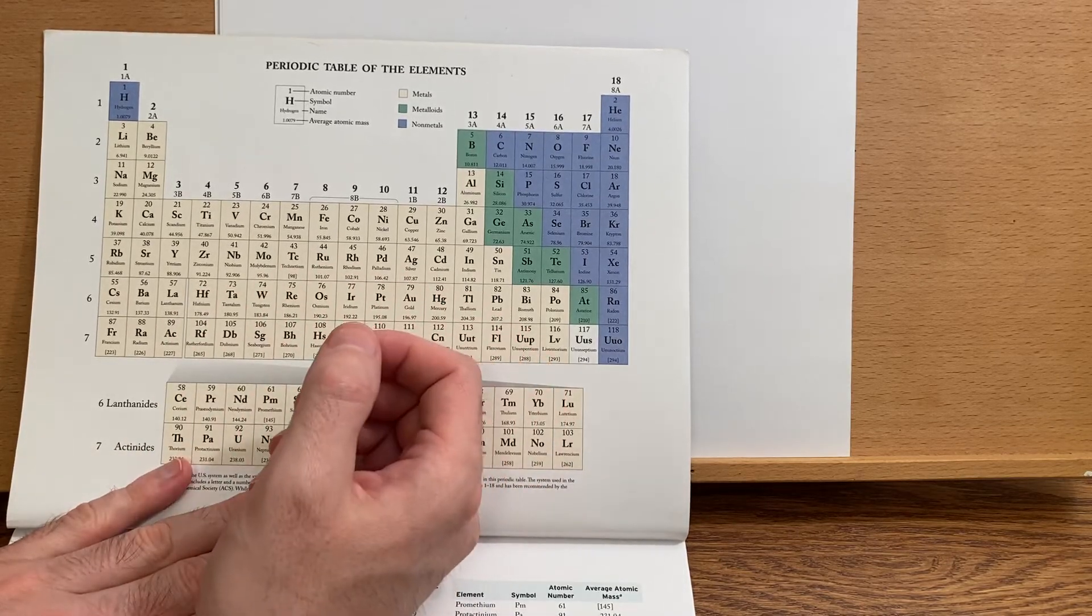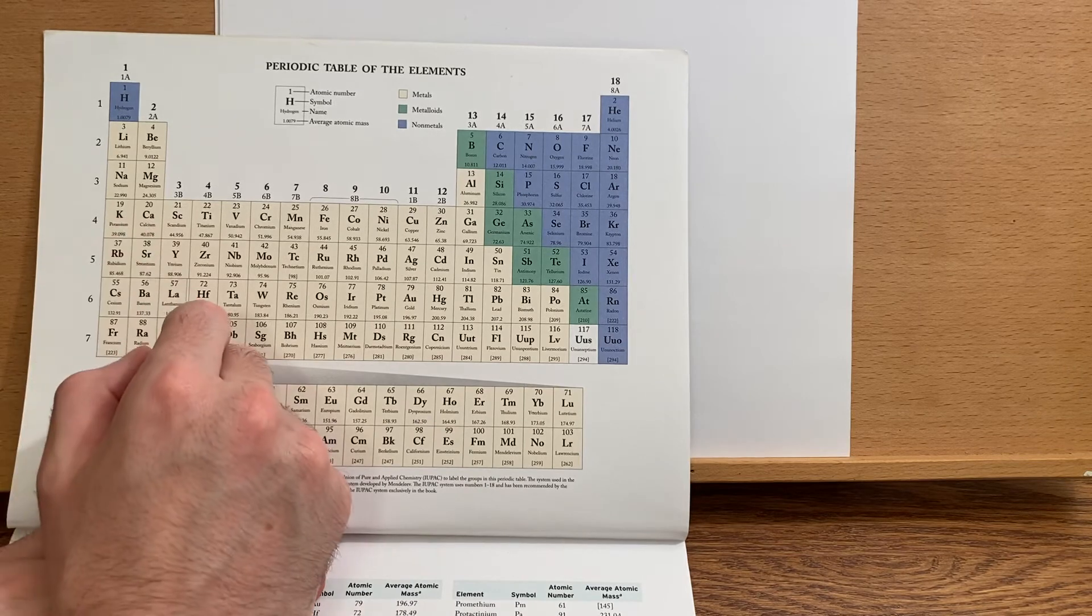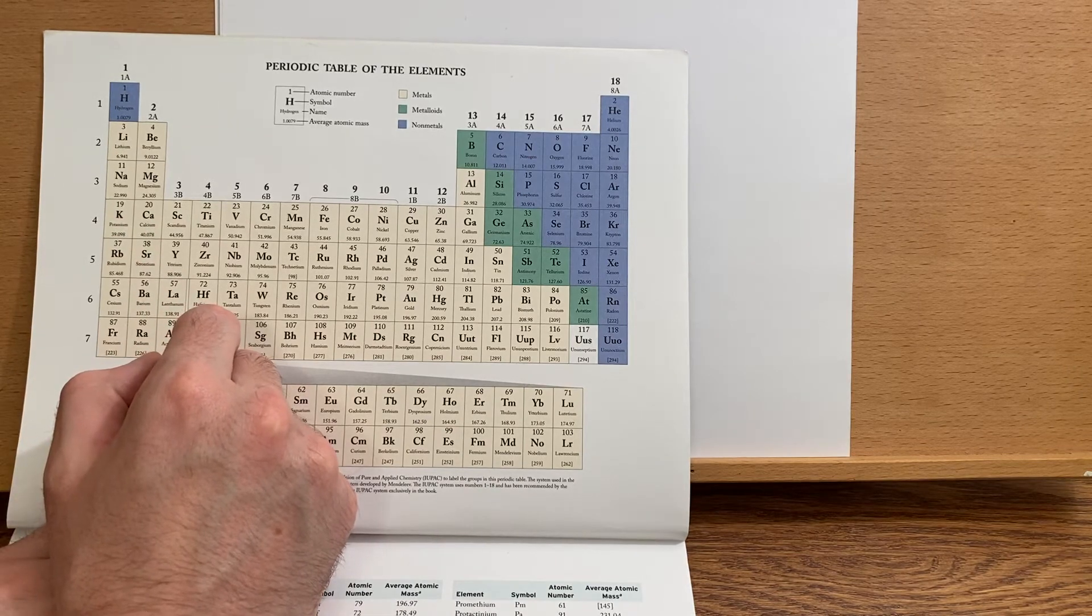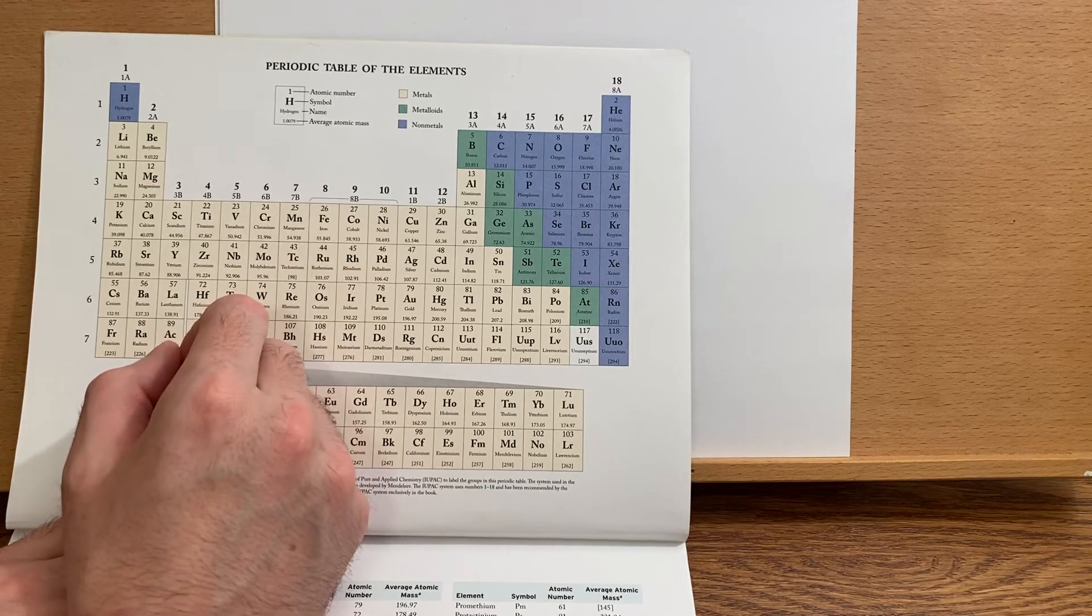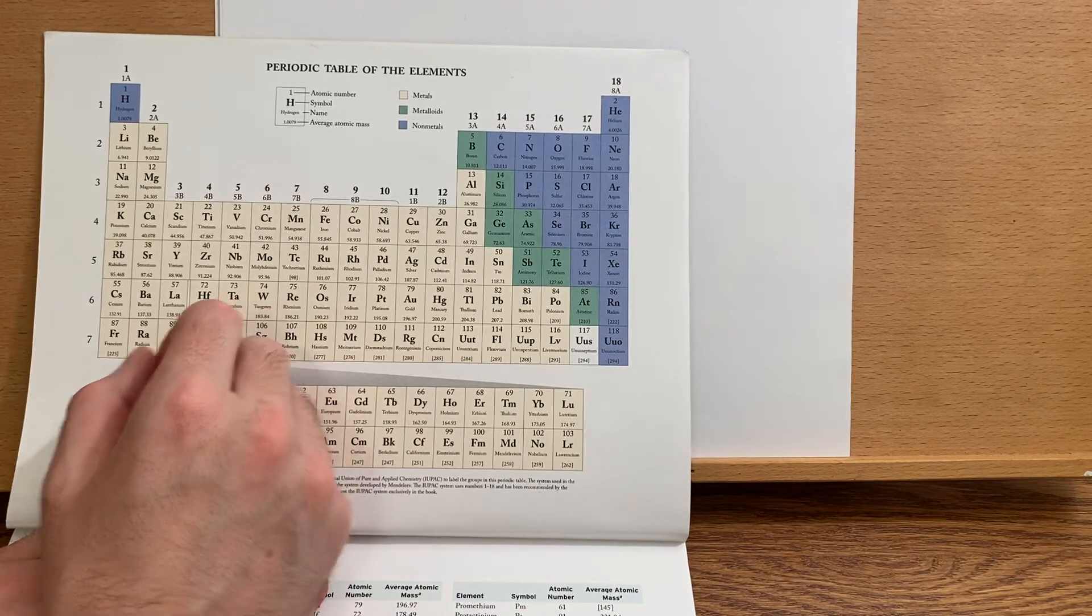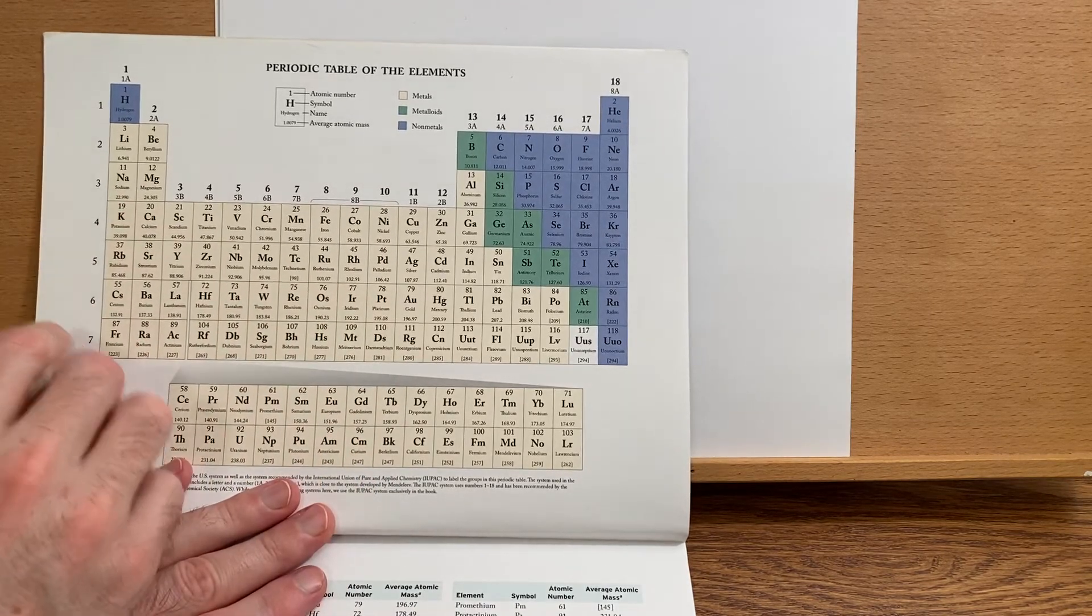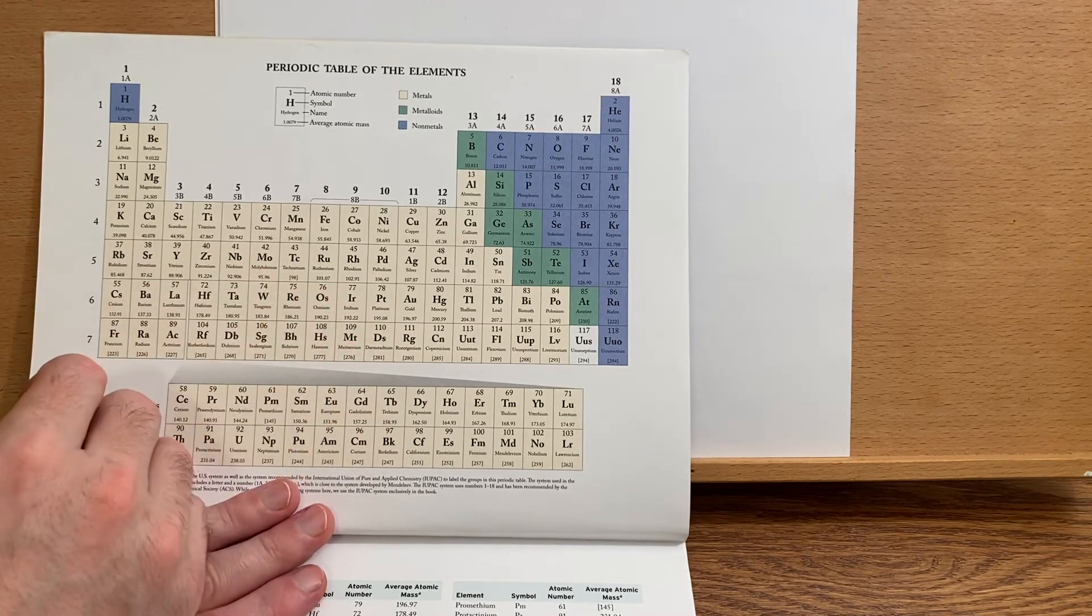And since we take away the 4s electrons first anyway, and generally the transition metal elements are plus two or plus three, these 4s electrons are gone anyway, so it doesn't really matter.